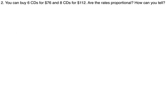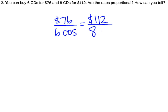Number two, you can buy six CDs for $76 and eight CDs for $112. Are the rates proportional and how can you tell? So we're going to set up a proportion, two fractions that are equal to each other. Our first rate is $76 for six CDs. Our second rate is $112 for eight CDs.